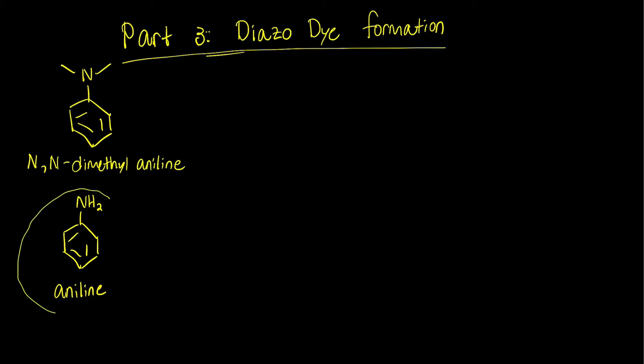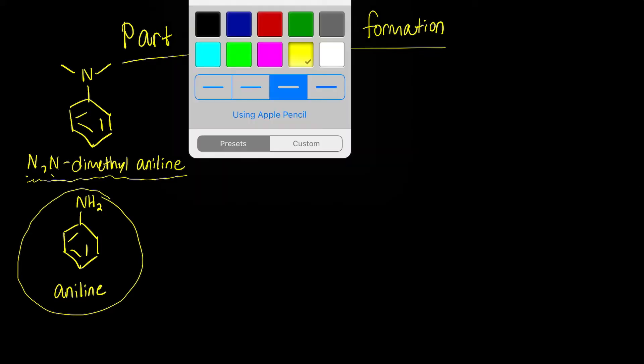So aniline has this structure here. It's benzene with an NH2 attached to it. This is N,N-dimethylaniline. The capital Ns denote where those methyl groups are attached, and we'll learn about the naming of amines later.